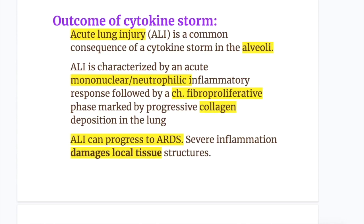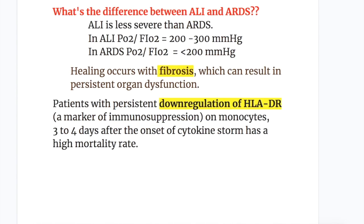The outcome of the cytokine storm includes acute lung injury (ALI). ALI is a common consequence of a cytokine storm in the alveoli, characterized by an acute mononuclear neutrophilic inflammatory response followed by a chronic fibroproliferative phase marked by progressive collagen deposition in the lung. ALI can progress to ARDS. Severe inflammation damages local tissue structures, and healing occurs with fibrosis which can result in persistent organ dysfunction. The difference between ALI and ARDS is that ALI is less severe: in ALI the PO2/FiO2 ratio is 200 to 300 mmHg, while in ARDS it is less than 200 mmHg.